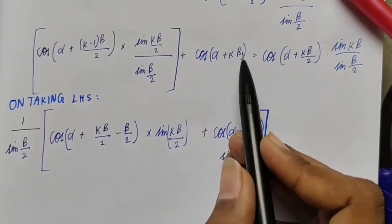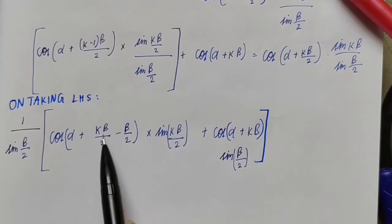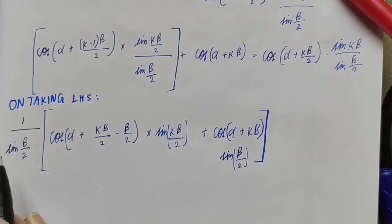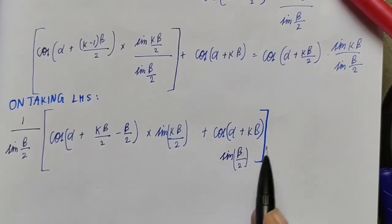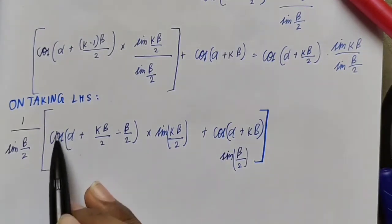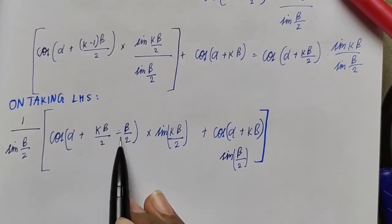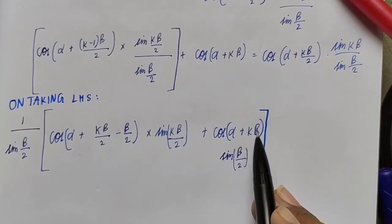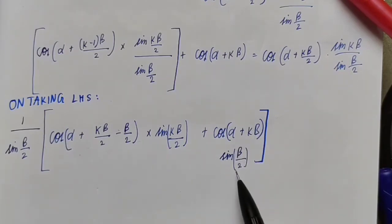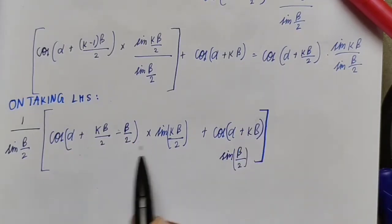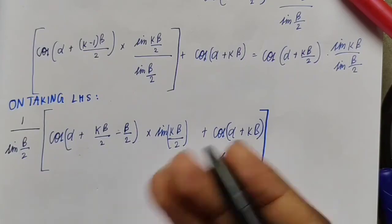We multiply by 1/sin(β/2) in the denominator. Expanding the bracket gives: cos(α + kβ/2 − β/2)·sin(kβ/2) + cos(α + kβ)·sin(β/2). In this step we need to apply the cos·sin product formula.